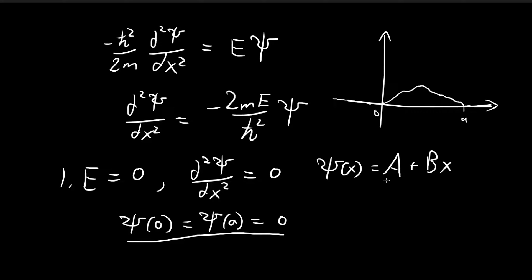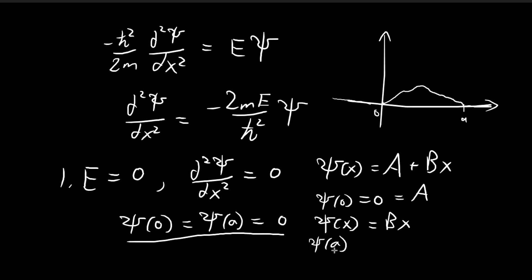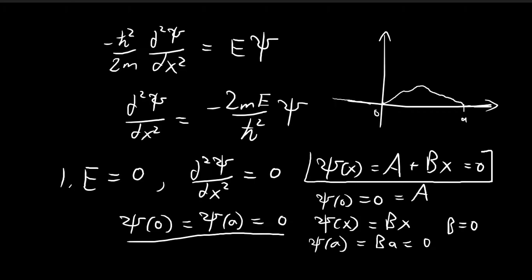Setting psi of zero equal to zero, we get B times zero plus A equals zero, so A equals zero. This simplifies psi of x to just Bx. Then to satisfy the second condition, psi of a equals Ba equals zero. Since a is not equal to zero, B must equal zero. So the entire psi of x is equal to zero — a trivial solution that doesn't work. Therefore, energy equal to zero gives us no viable solutions.